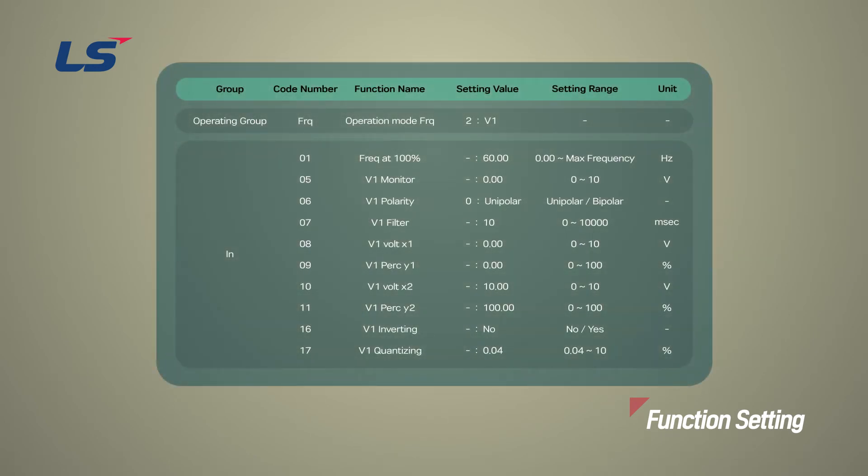Parameters related to analog input can be set in ingroup. First, set ingroup 6 to unipolar, because we will not use negative voltage here. If the range of minus 10 volts to plus 10 volts is needed, set it as bipolar.